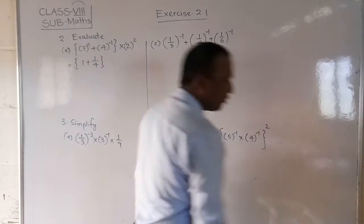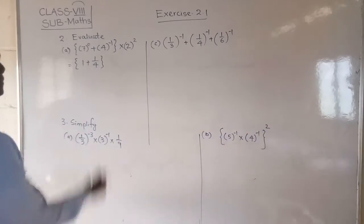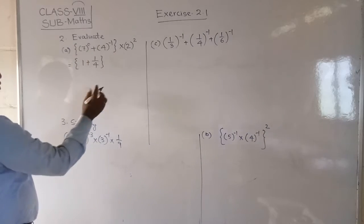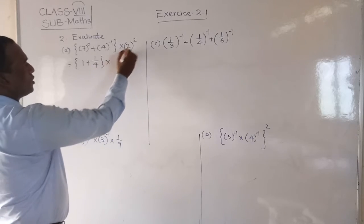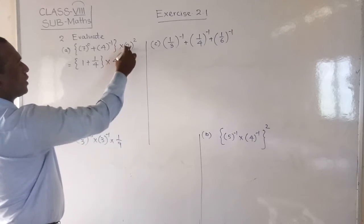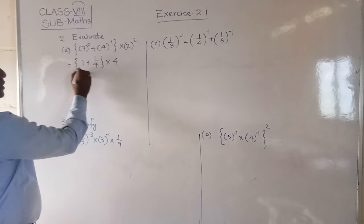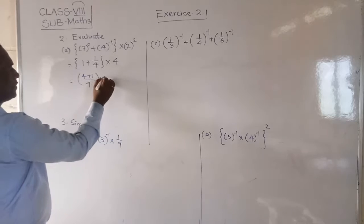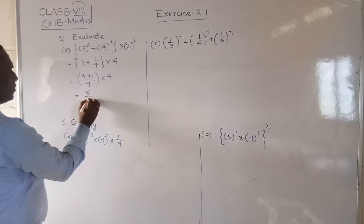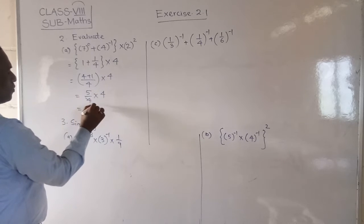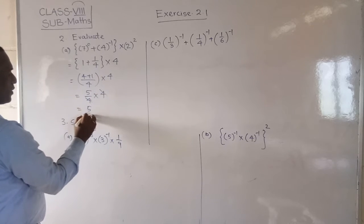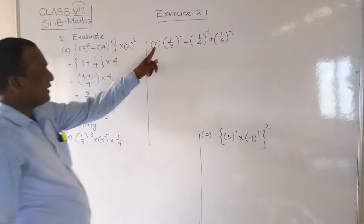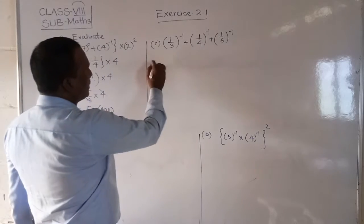7 to the power 0, that means 1, plus 4 to the power minus 1 is equal to 1 by 4, the reciprocal. This equals 1 plus 1 by 4. Into 2 to the power 2. 1 plus 1 by 4 equals 5 by 4. Into 4 is equal to 5 by 4 into 4, 4 cancel. This is the answer, 5.